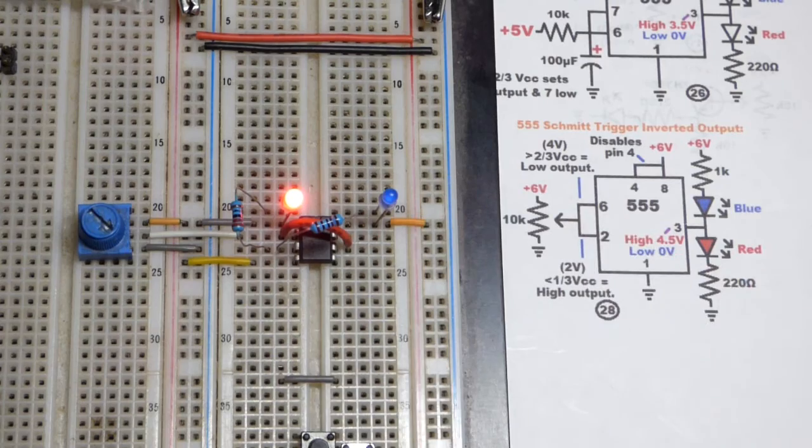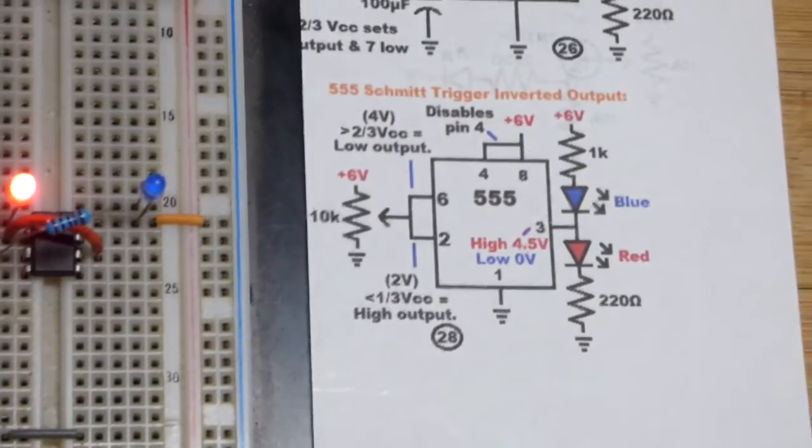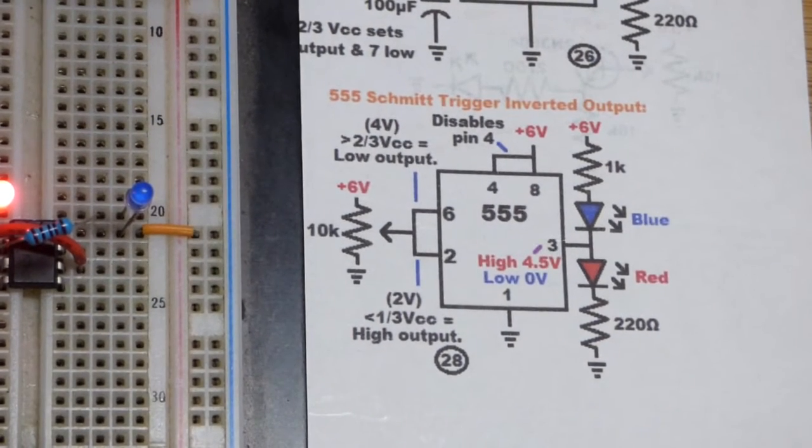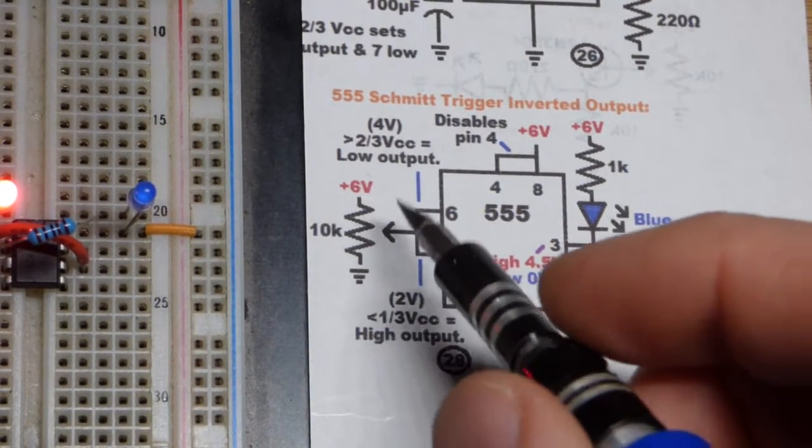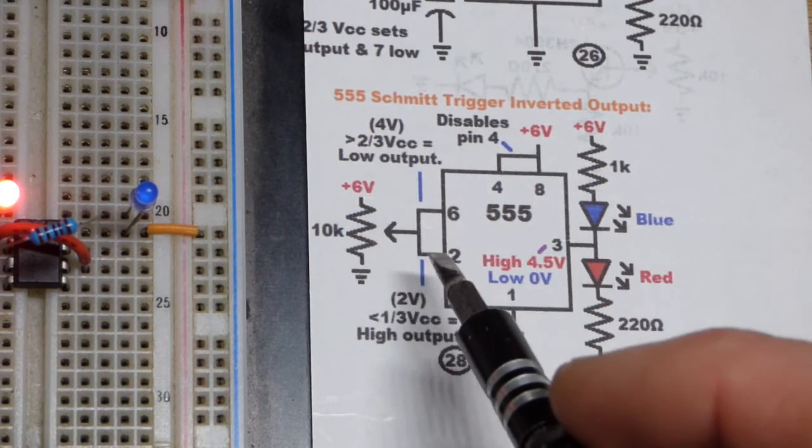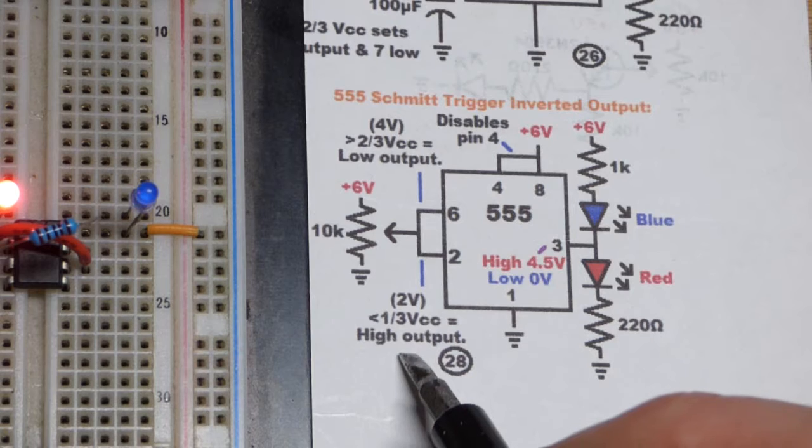You have to go below two-thirds of the supply voltage to set the output high, and to make that easy I used six volts as you can see there as the supply voltage. So if we were measuring the voltage of the trim pot, we should have saw that about four volts.